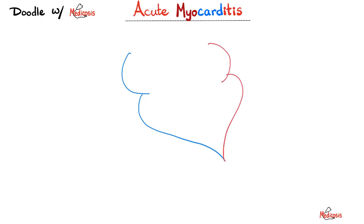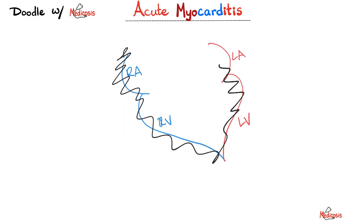Here's the right side of the heart and the left side of the heart: right atrium, right ventricle, left atrium, and left ventricle. If I have myocarditis, the myocardium is inflamed. You have a right side and a left side of the heart, so let's draw the septum.